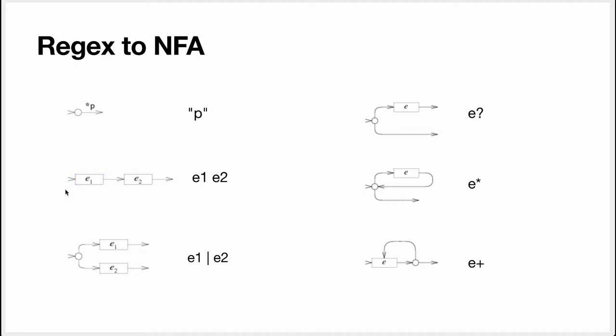You'll notice here that there is no starting state, and what that means is that the starting state of e1 becomes the starting state for the whole expression. Finally, you'll notice that these don't have any label, and these are empty transitions. So these are transitions that can be taken immediately without consuming any input.